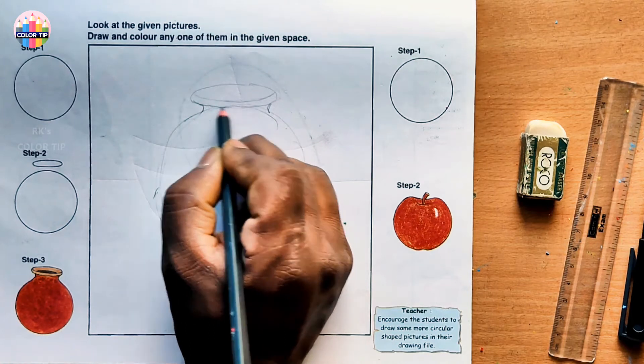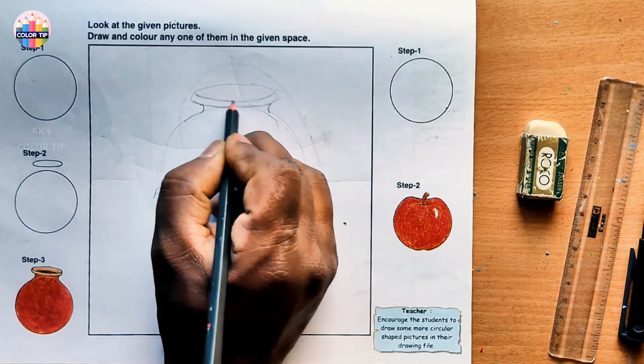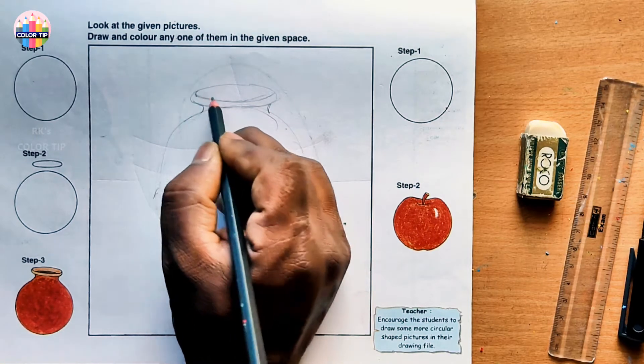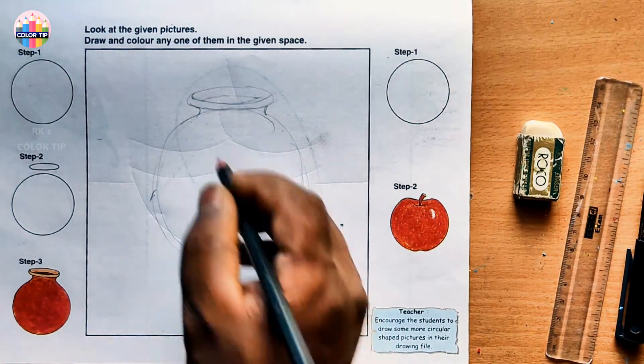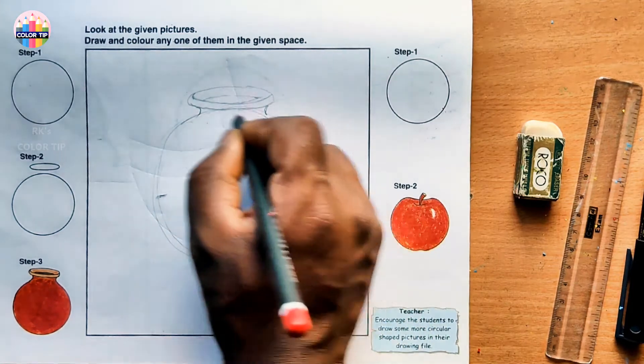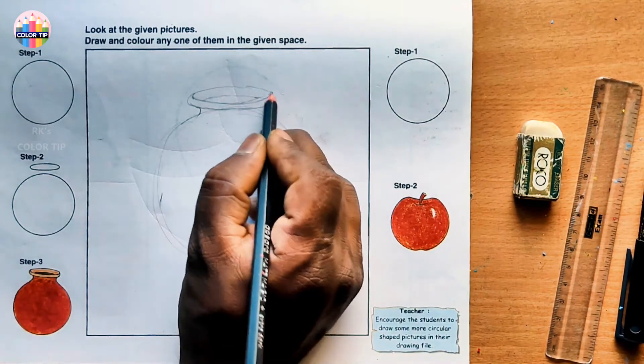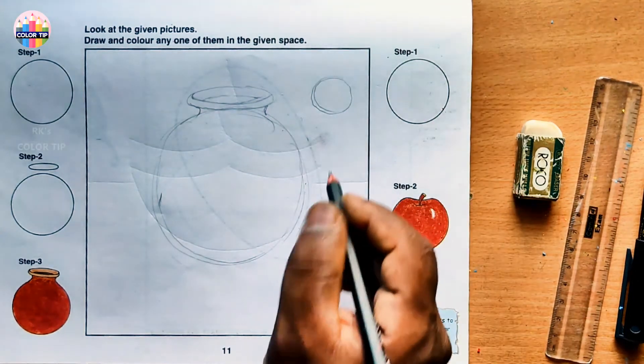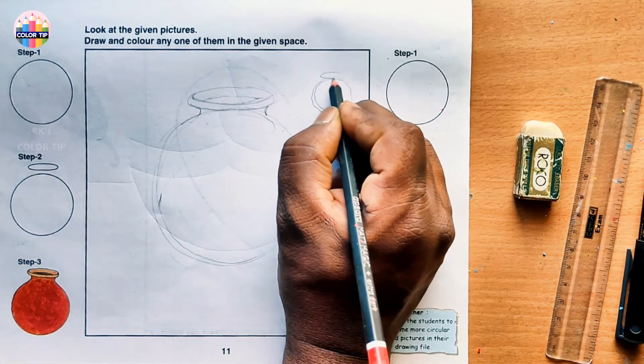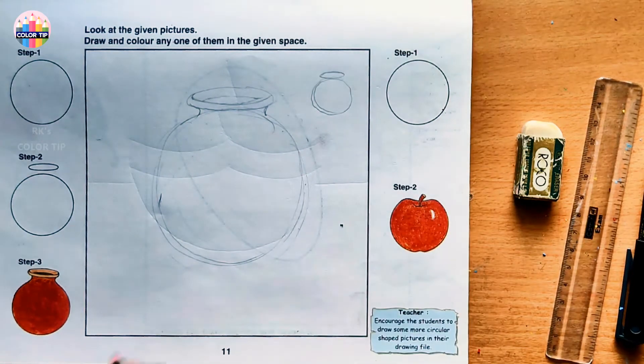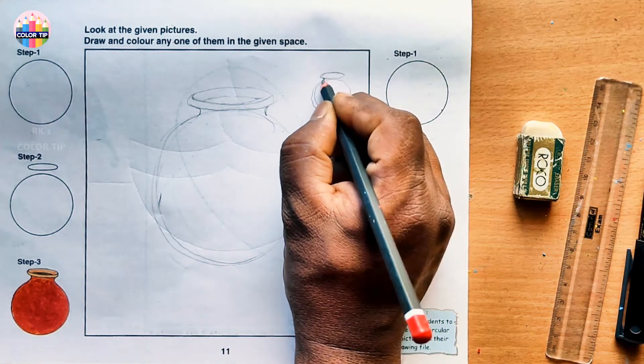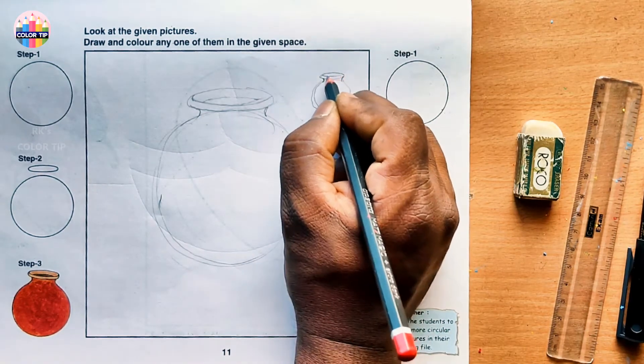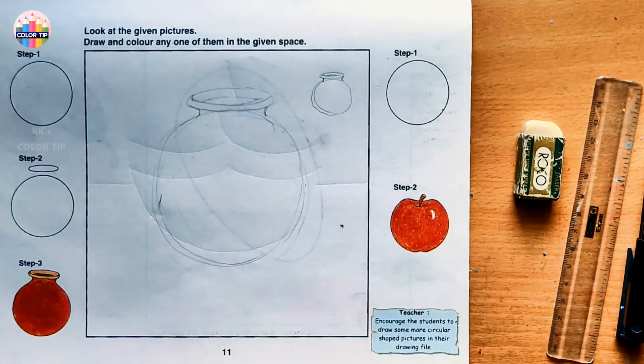Draw a line parallel to this oval shape line. Draw one more line on the opposite side also. Draw a circle and then draw an oval shape, join it around here. Small curve inside, small curve inside, double line of this and double line of this with the pot.